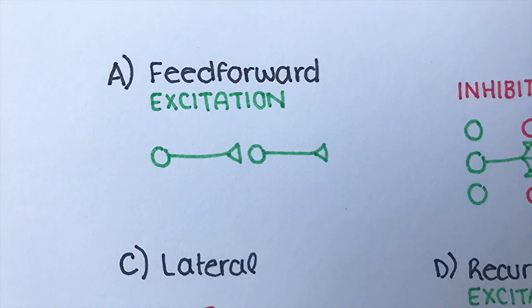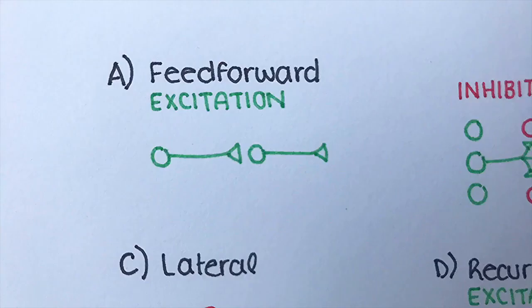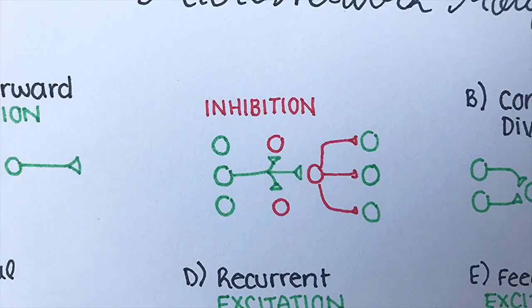The first is feedforward excitation, which allows one neuron to relay information to its neighbor. Next you can see feedforward inhibition, where a presynaptic cell excites an inhibitory interneuron that then inhibits the following cell.